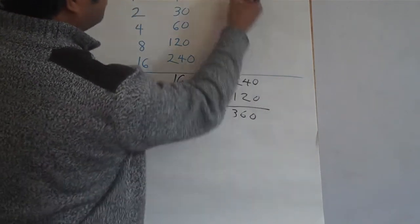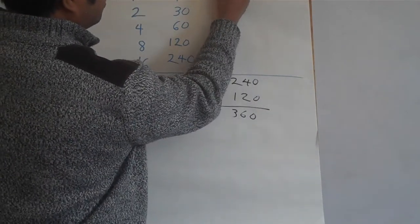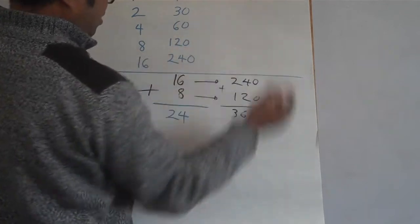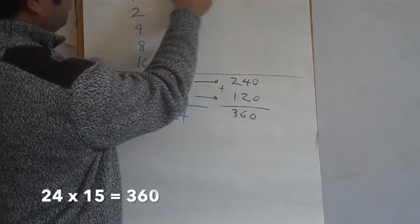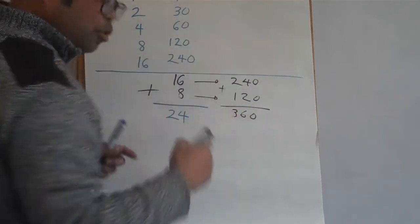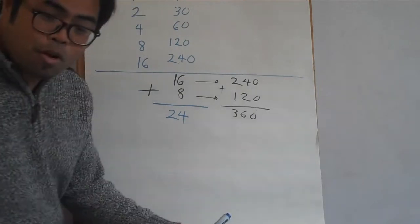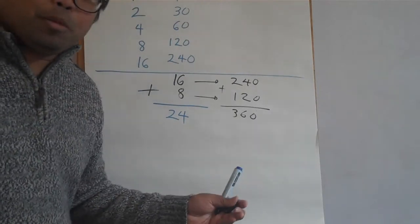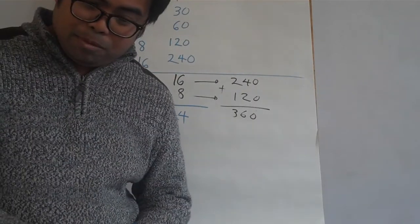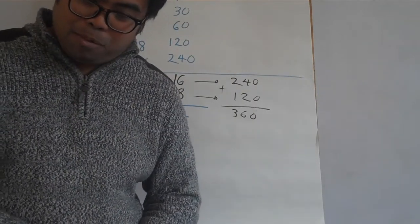Three hundred and sixty — and that is your answer. So this is done with no multiplication table, just doubling. Are there any questions?